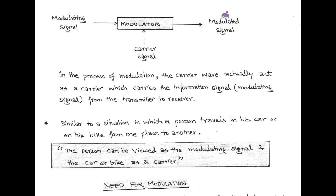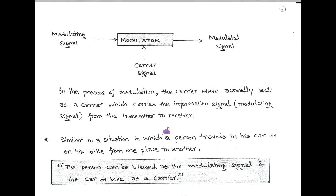In the process of modulation, the carrier wave acts as a carrier which carries the information from transmitter to receiver. This is similar to a person traveling in his own car or bike from one place to another. Here the person is viewed as the modulating signal or message signal, while the car or bike is viewed as the carrier.